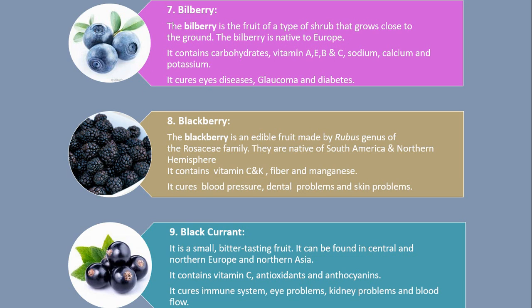Number 9. Blackcurrant. It is a small, bitter tasting fruit. It can be found in Central and Northern Europe and Northern Asia. It contains vitamin C, antioxidants and anthocyanins. It cures immune system issues, eye problems, kidney problems and blood flow.